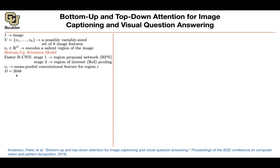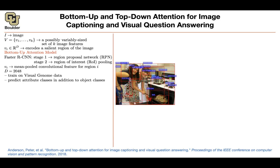Let's say d is 2048 dimensions, coming out of your CNN. How do you train it? You train it on Visual Genome data. Not only do you predict the object, but you also predict the attributes. For example, not only do you predict that this person is a woman, but also that she has long hair. Not only do you predict that's a glass, but that it's a black glass; that's a white outlet; this is a green bottle. Each image gives you many boxes, each box gives you a vector, and you have K vectors per image.